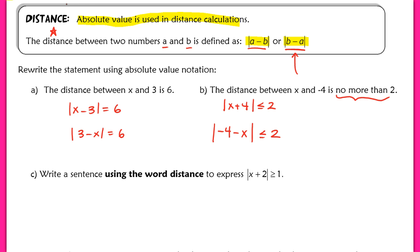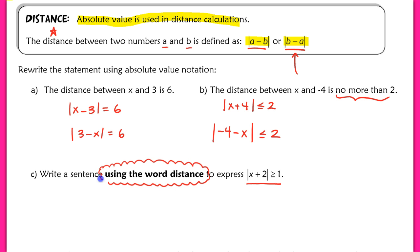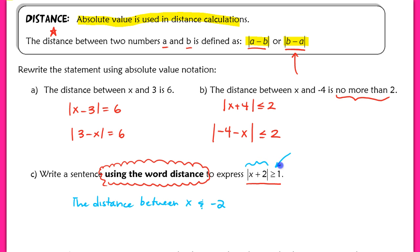In part c, we do the reverse: convert a math statement to words using the word 'distance.' The expression is the absolute value of x plus 2 greater than or equal to 1. Since there's a plus sign, the reference point is negative 2. We write: 'the distance between x and negative 2 is at least 1,' because greater than or equal to means at least that value.